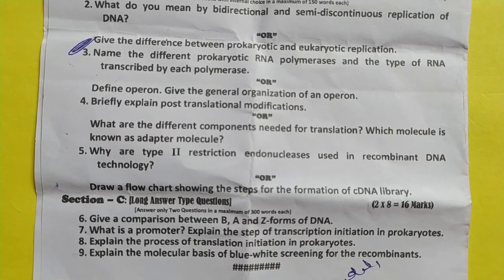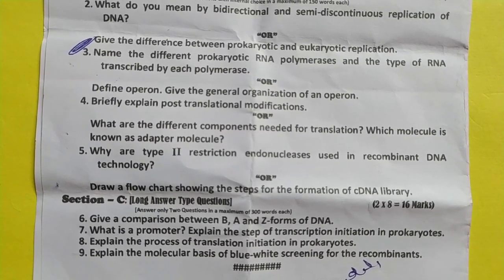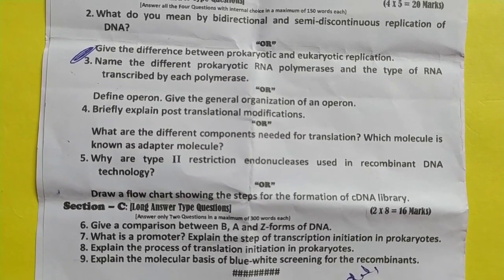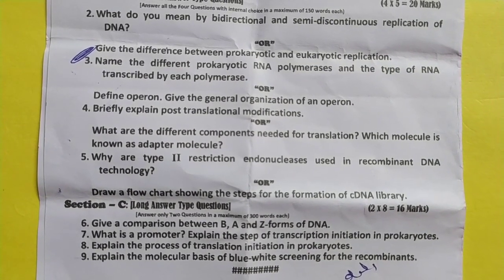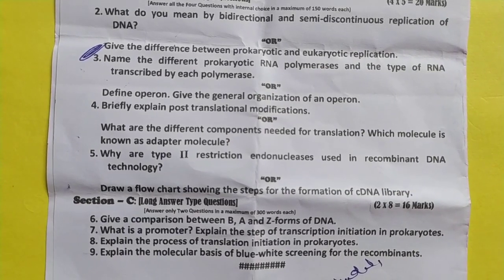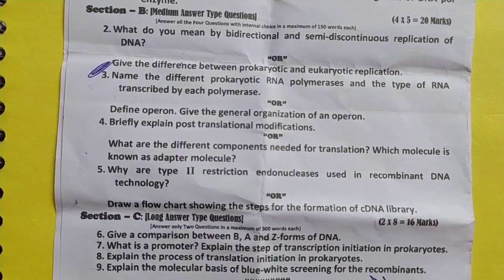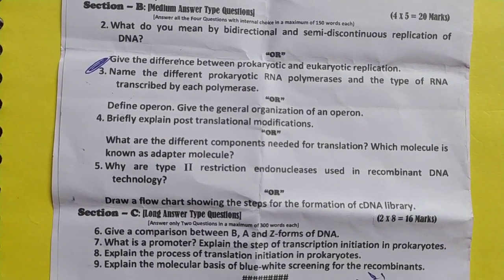Why is type 2 restriction endonuclease used in recombinant DNA technology? Draw a flow chart showing the steps for the formation of a cDNA library.